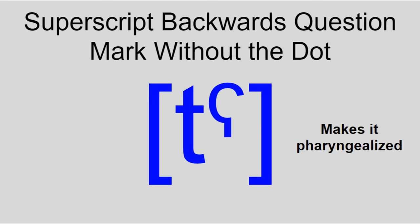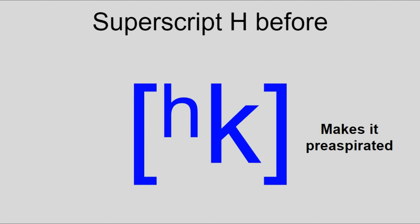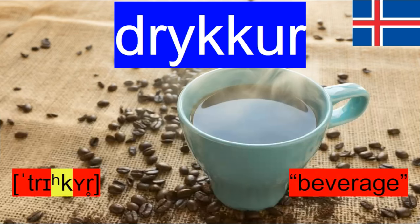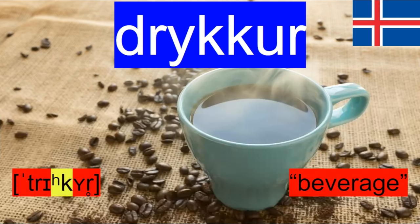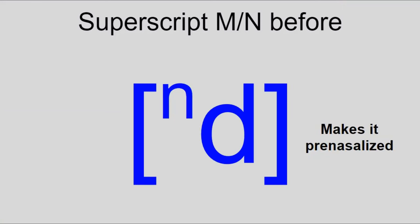The superscript backwards question mark without the dot indicates pharyngealization, a feature found in Arabic. Sometimes superscripts can also go before a consonant — like H for pre-aspiration, a feature found in Icelandic — while any superscript nasal consonant can be used for pre-nasalization, a feature found in many African languages.